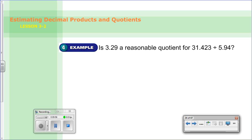Alright, and then finally, last one for the night. Is 3.29 a reasonable quotient for 31.423 divided by 5.94? So what they want us to do is divide these out and see, is this about a reasonable answer or is this pretty far off? So we need to divide those. Well, 31.423, I'd round to 30. Because here we have 5.94. Well, that's close to 6. And I know I can do 30 divided by 6. Those are compatible. And I get an answer of 5.